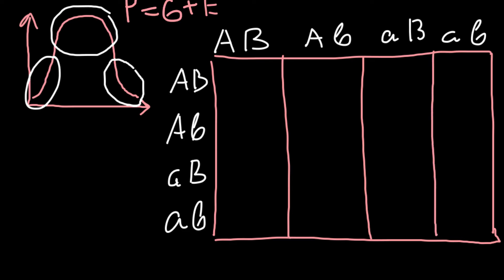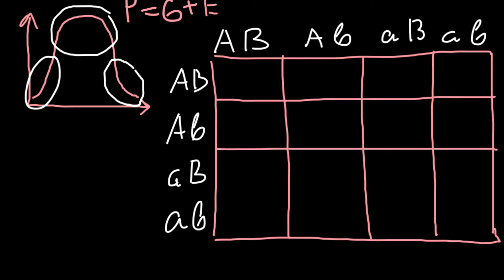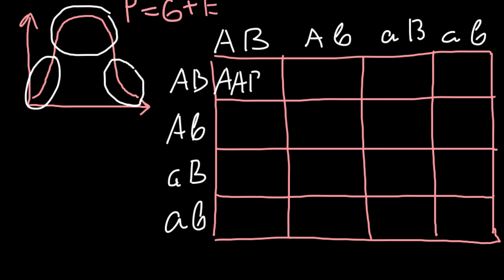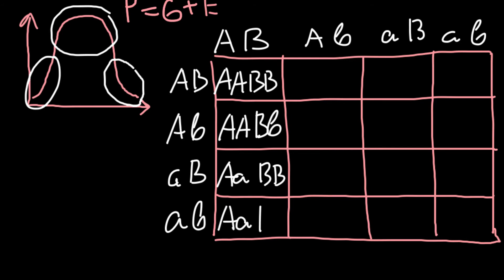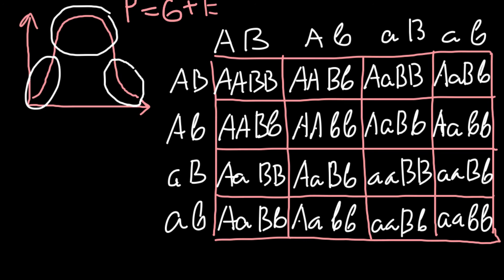When we build the 4 by 4 Punnett square we can see all the genotypes we can get. I'll speed up the video to save time while filling in the cells. For an additive trait, genotype equals phenotype — though as I mentioned, this rarely happens in real life because most traits are influenced by the environment, producing a smoother bell-shaped curve.